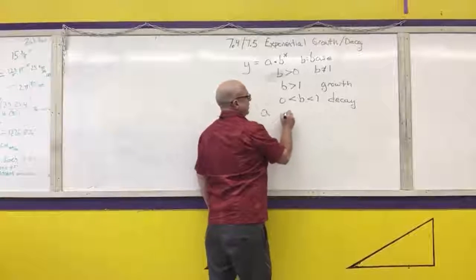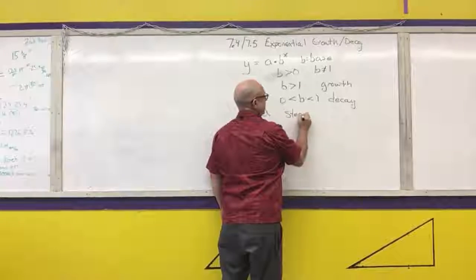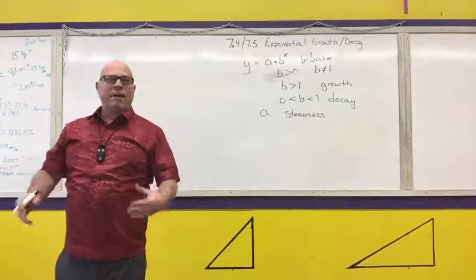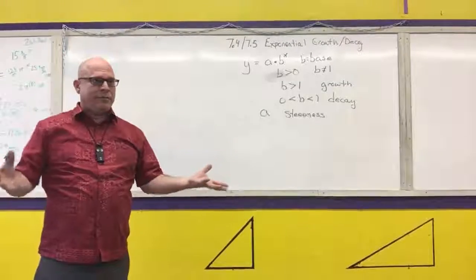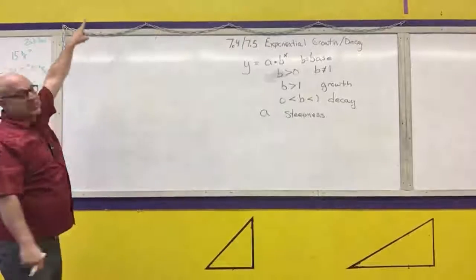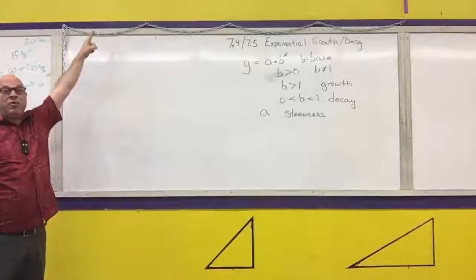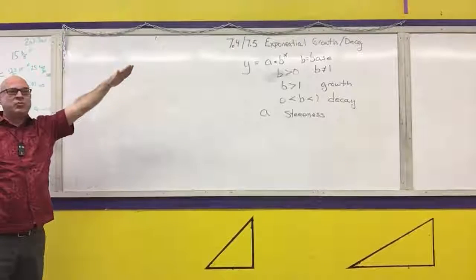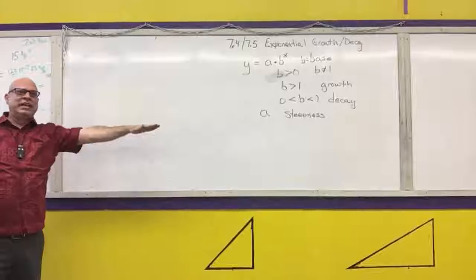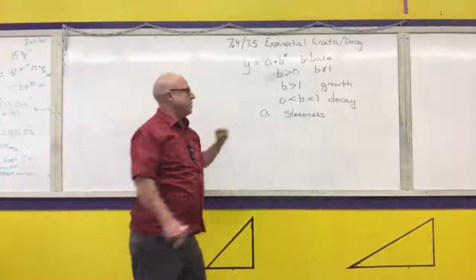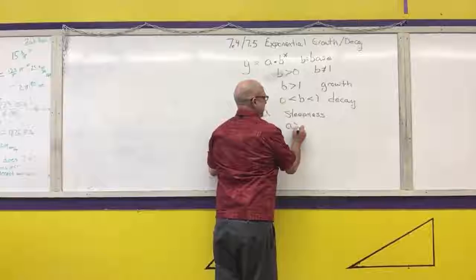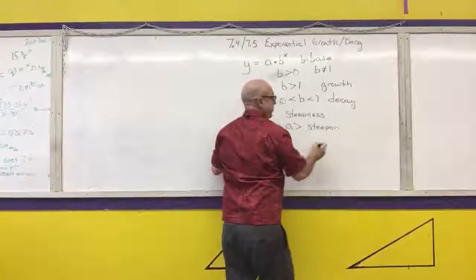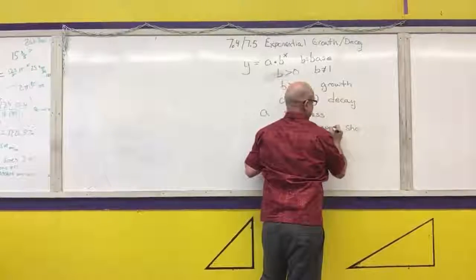The A represents the steepness of your graph. When we come up with our generic graph, a steepness of 1 is like a slope of 1. If slope is 2, it's going to be steeper. If slope is one-half, it's going to be less steep. Same thing here — if A is greater than 1, we say it's steeper, or more steep. It's going to shoot up faster.